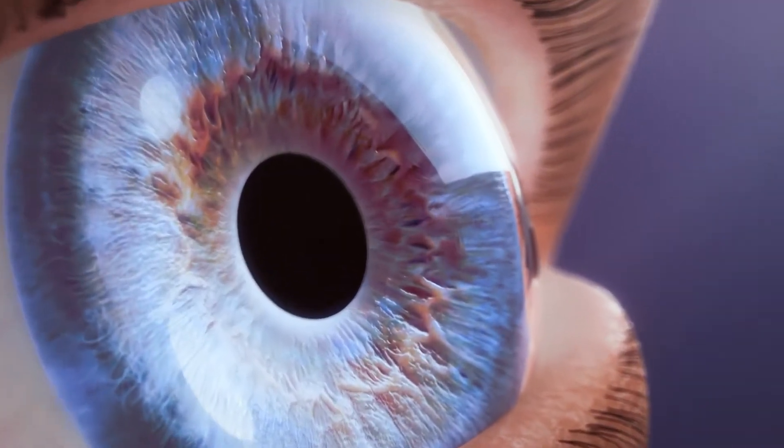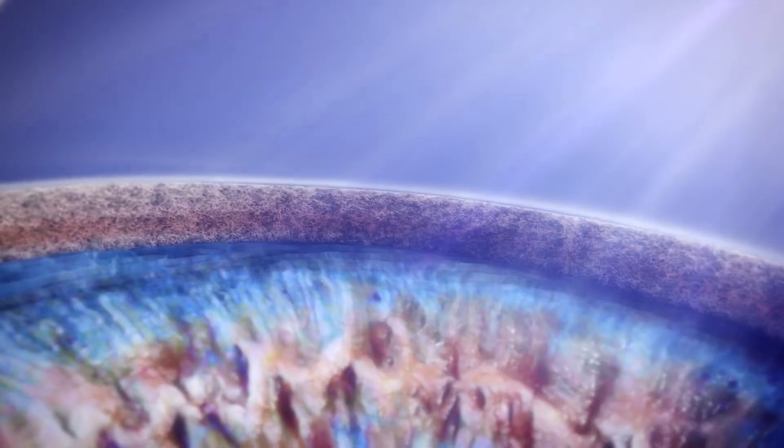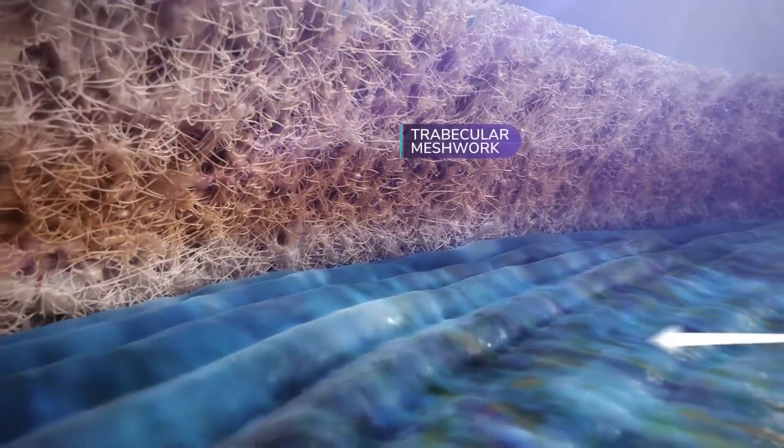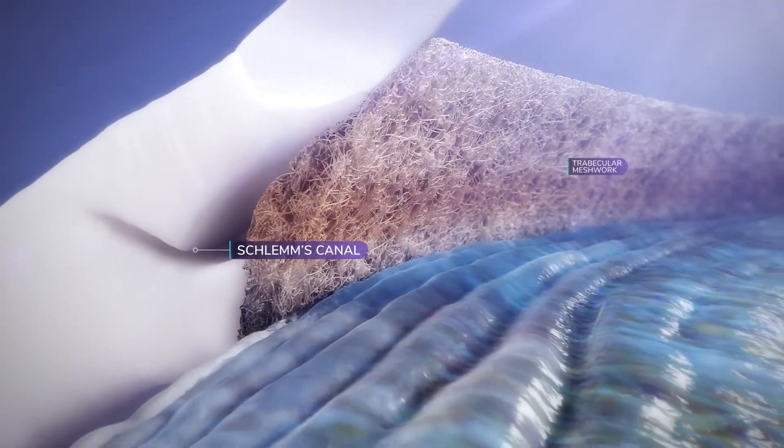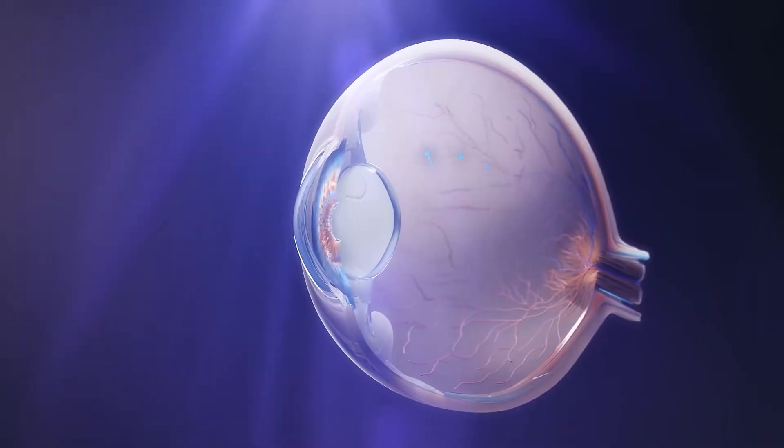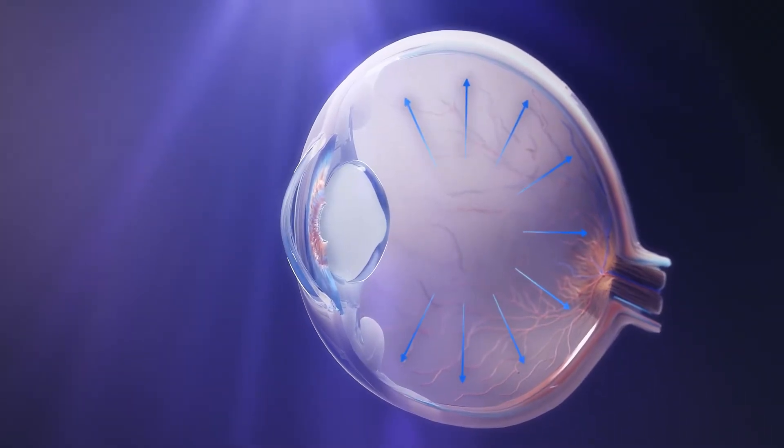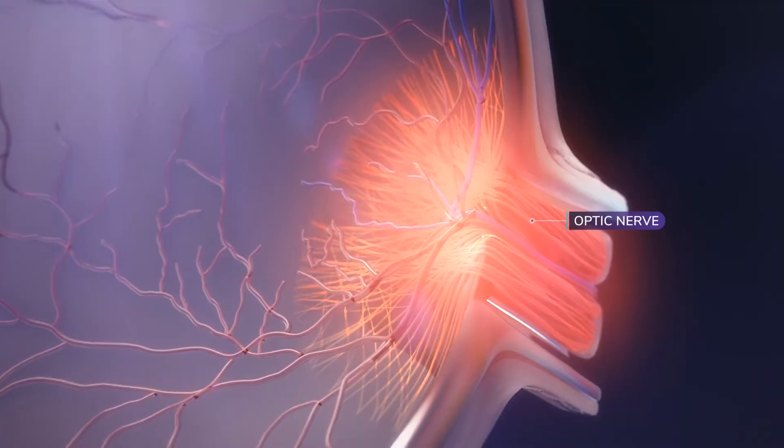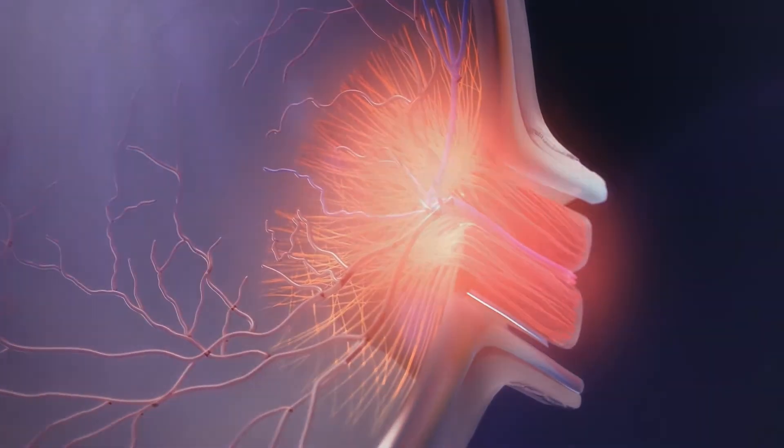Glaucoma is a disease that can occur when an important fluid in the eye, called aqueous humour, is unable to drain efficiently through the trabecular meshwork. This increases intraocular pressure, which can damage the optic nerve and lead to progressive vision loss.